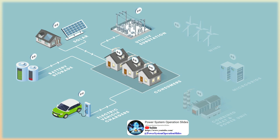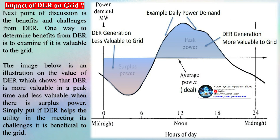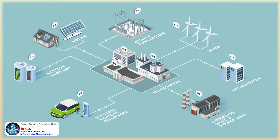The next point of discussion is the benefits and challenges from DER. One way to determine benefits is to examine if DER is valuable to the grid — it is more valuable at peak times and less valuable when there is surplus power. A few benefits from DER include: deferral of distribution network upgrades, reduction in line losses, reduction of emissions, backup power during emergencies, demand charge reduction and energy arbitrage, voltage and frequency support, spinning and non-spinning reserves, and black start support.